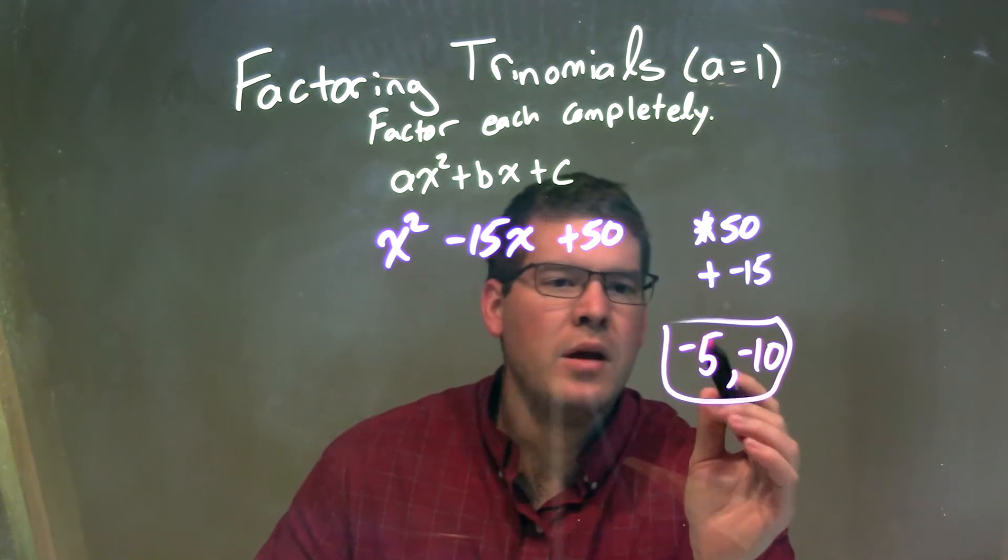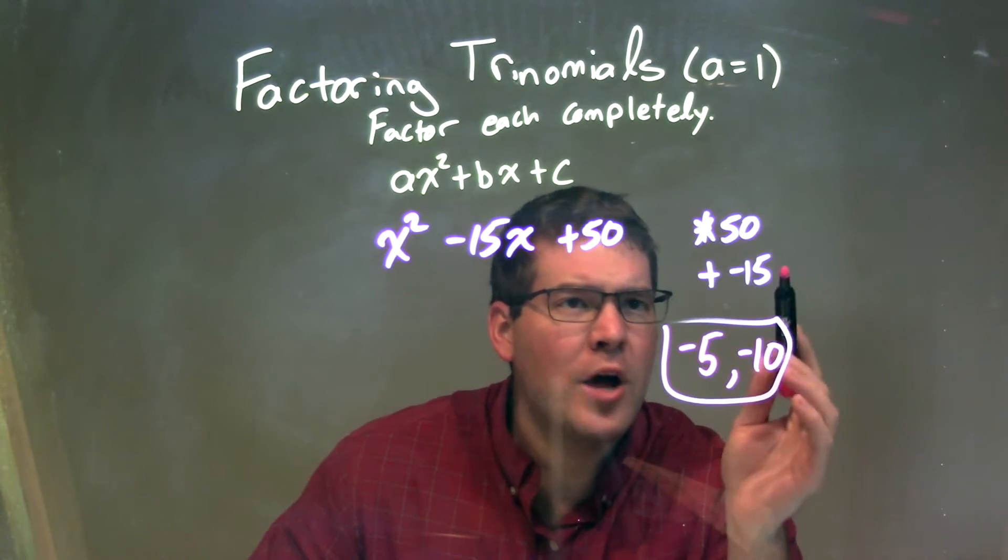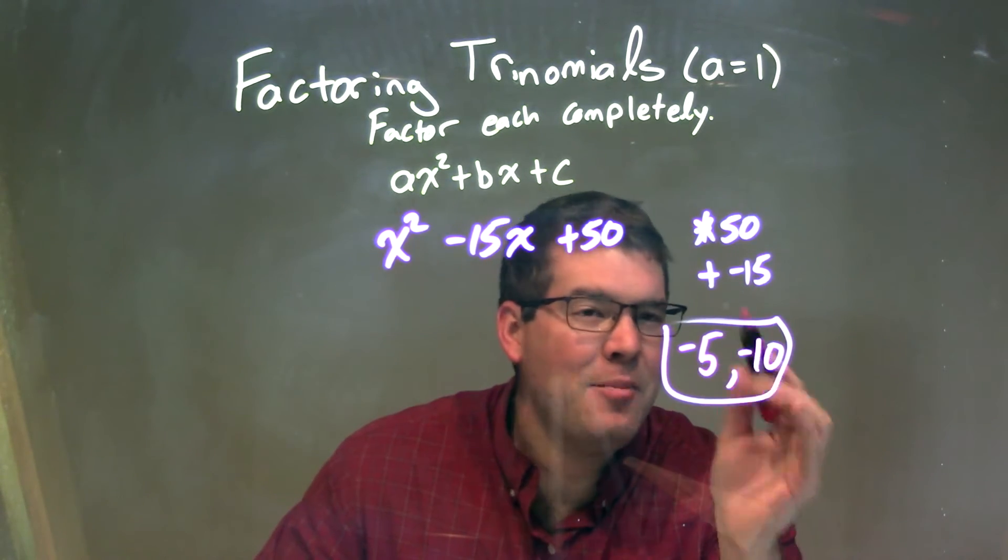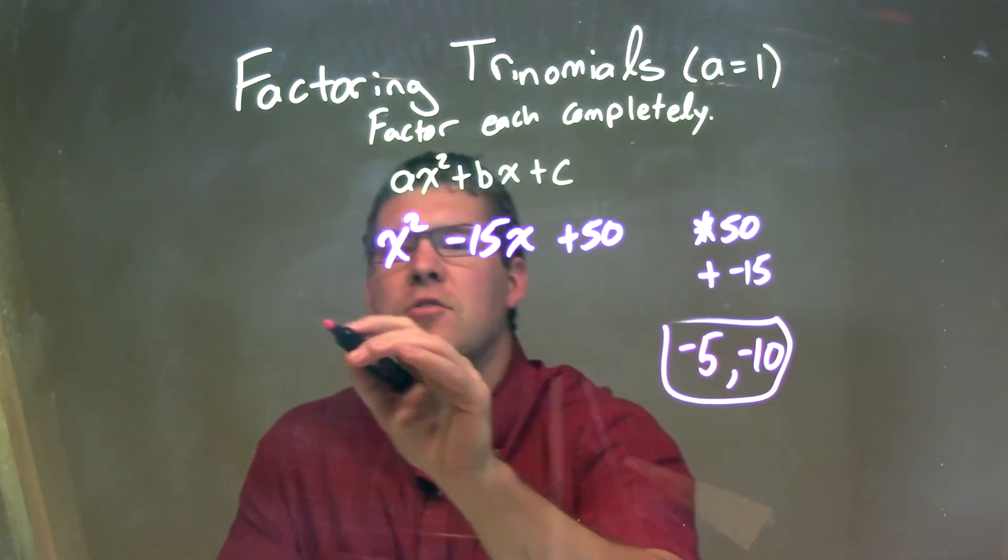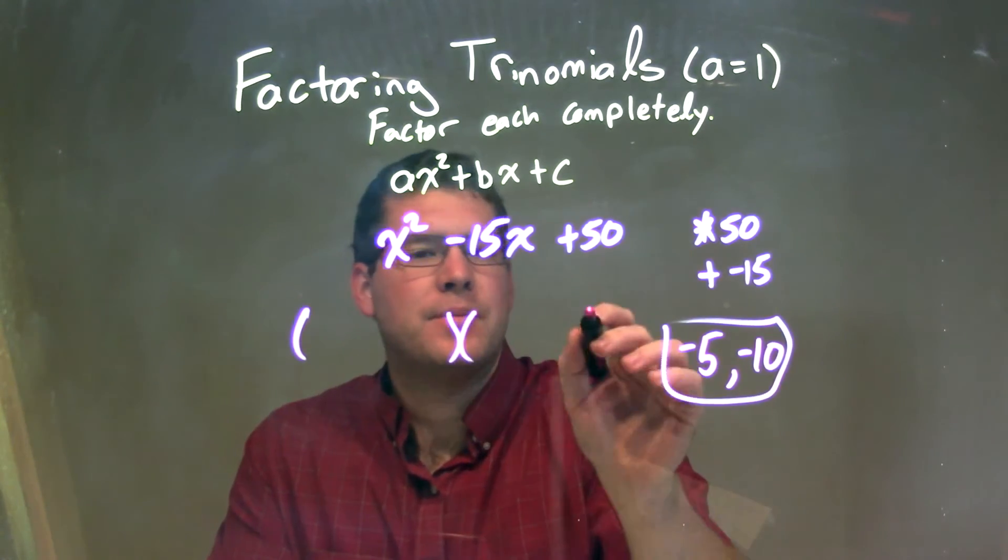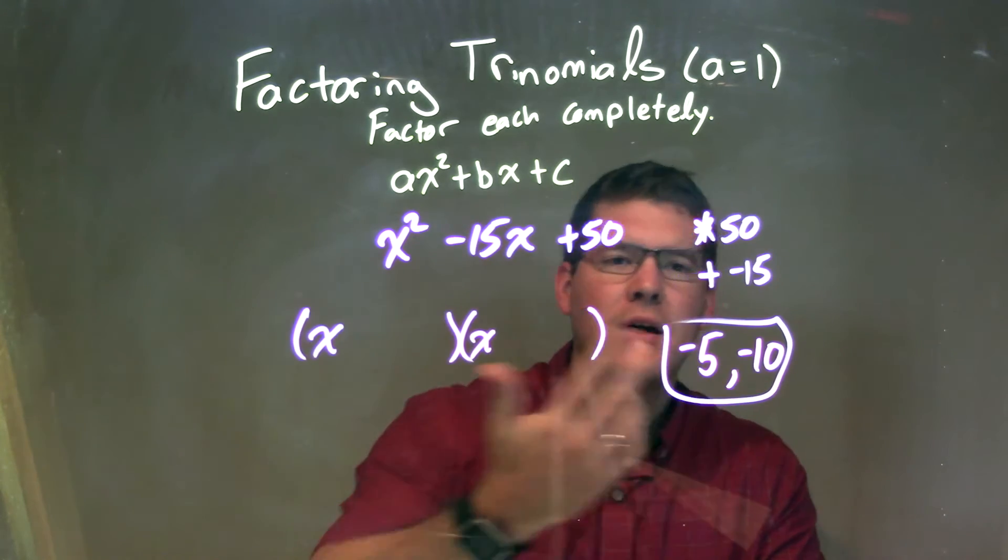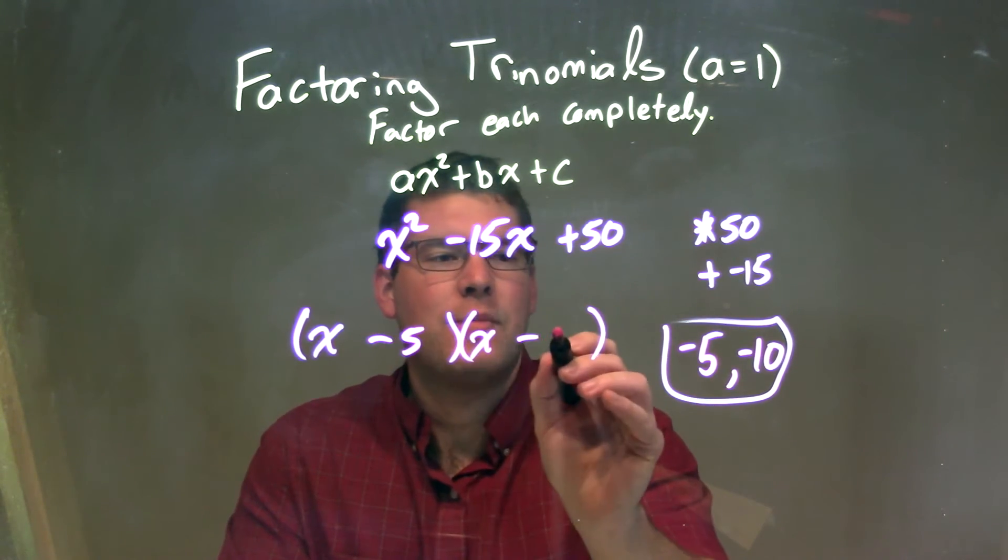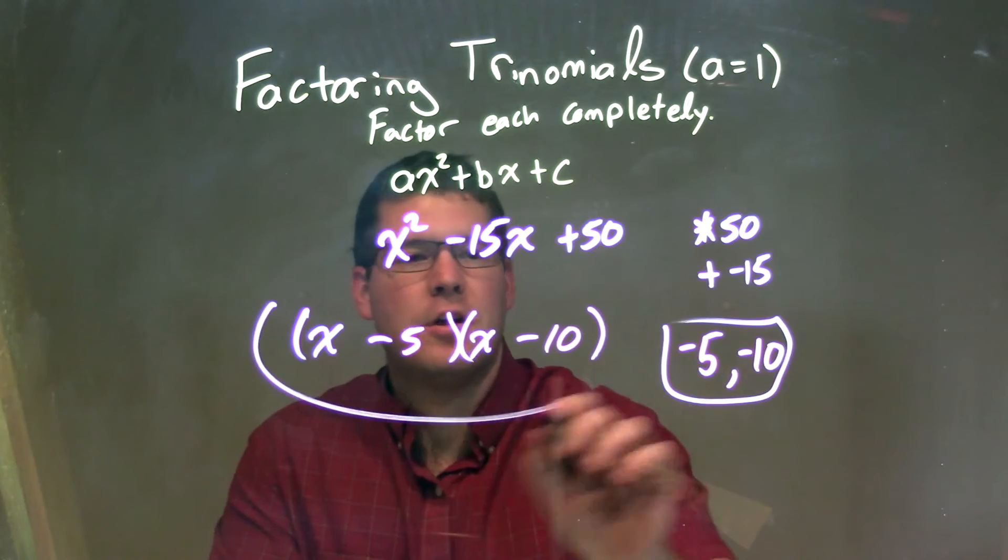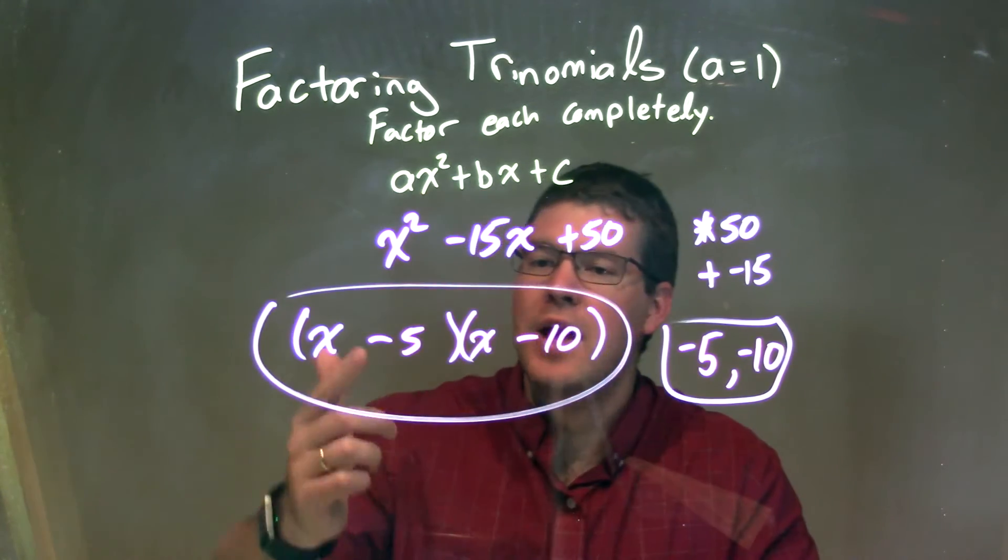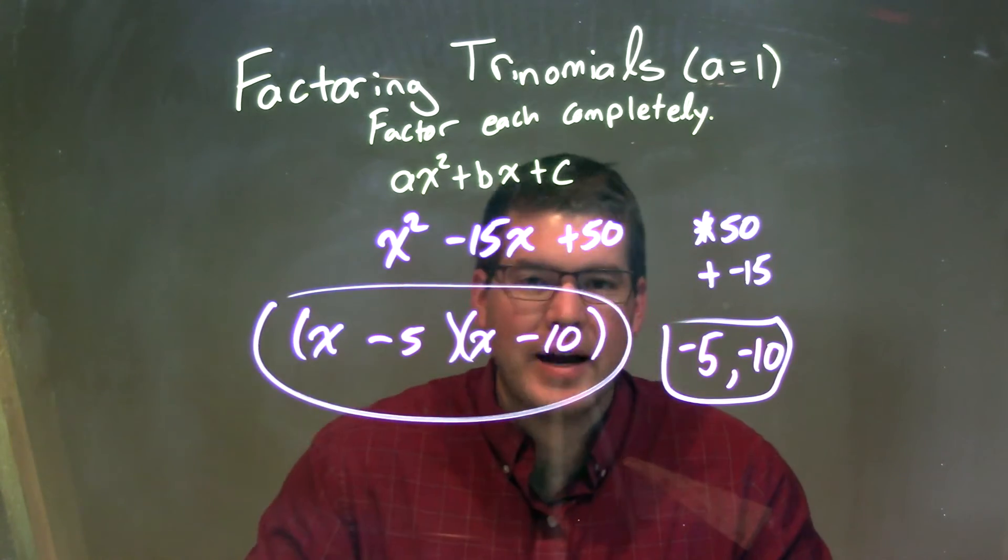So we have negative 5 and negative 10. These two numbers multiply to be positive 50, but when I add them I get negative 15. So I can break this apart, like I always do, with an x in front at the beginning of each parentheses, and then I plug in the two numbers we found: x minus 5 and x minus 10. And there we have it. Our final answer here that's factored is x minus 5 times x minus 10.